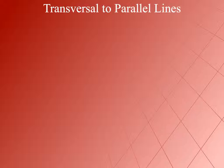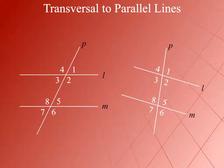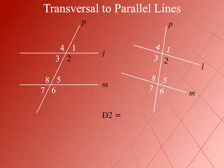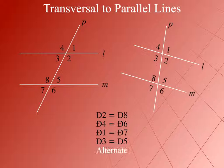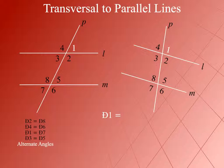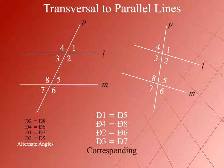Transversal to Parallel Lines. When a transversal intersects two parallel lines, eight angles are formed. If we measure the angles, we find: Angle 2 = Angle 8, Angle 4 = Angle 6, Angle 1 = Angle 7, and Angle 3 = Angle 5 — these are alternate angles. Also, Angle 1 = Angle 5, Angle 4 = Angle 8, Angle 2 = Angle 6, and Angle 3 = Angle 7 — these are all corresponding angles.